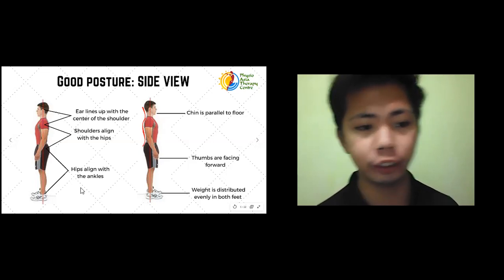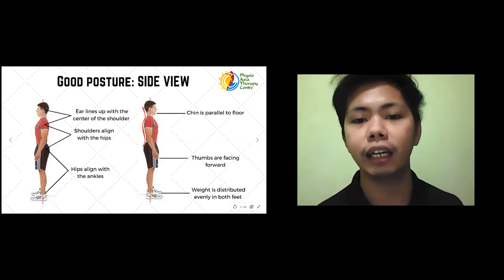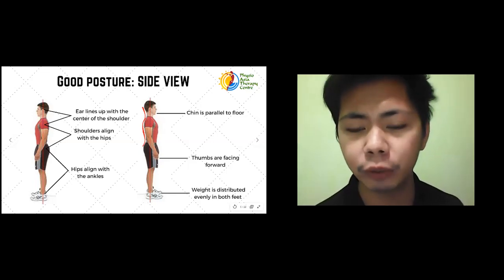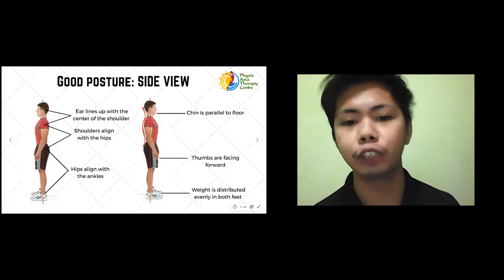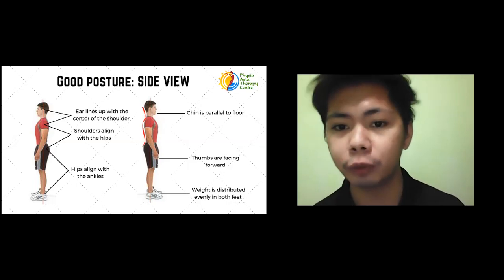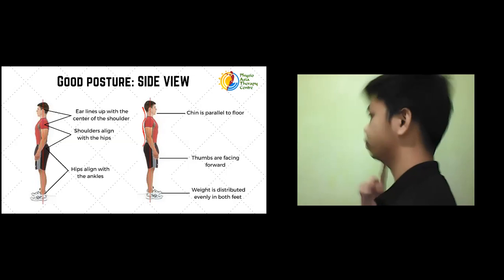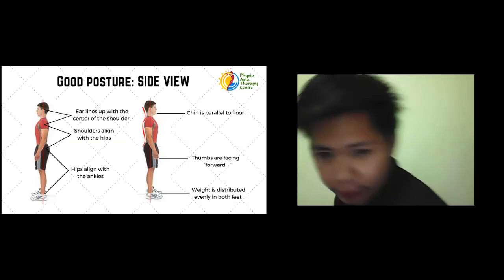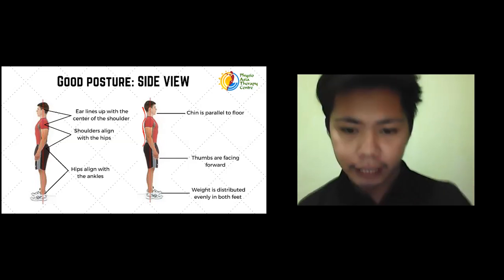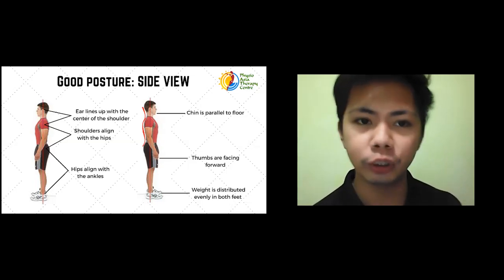Another way to check is by confirming the four spinal curves: a hollow curve on the back of the neck, a rounded curve on the upper back, another hollow curve on the small of our back, and a rounded curve on our pelvis. These curves should be neutral — not excessively flat or excessively curved. Also, the chin should be parallel to the floor, not pointed upward or downward. Thumbs should face forward, signifying the shoulders are in neutral position, and weight should be distributed evenly on both feet.